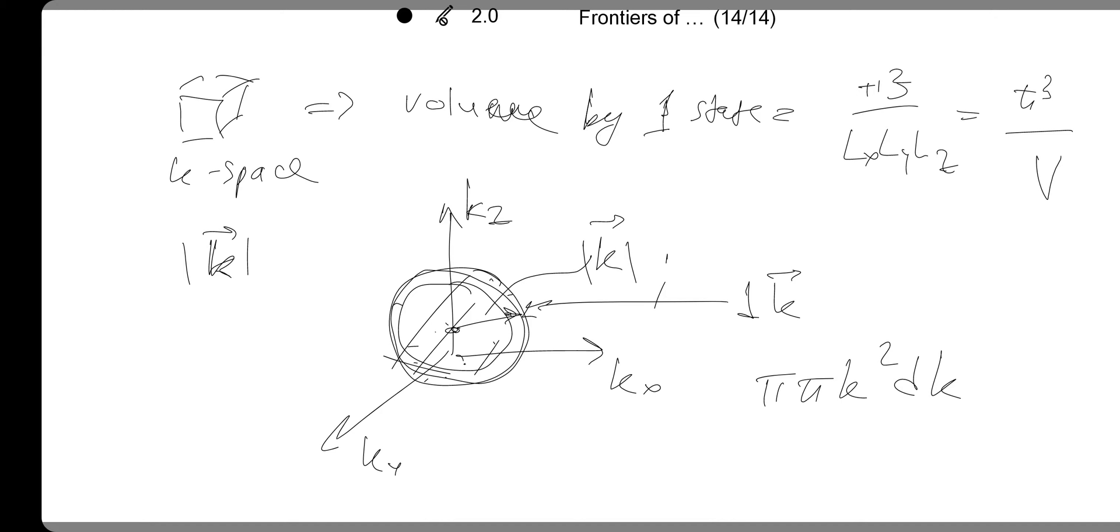And then now we need to calculate what would be the number of states within this spherical shell, so g of k dk. This equals the volume of the shell divided by volume per one state. So g of k dk is 4π k squared dk divided by π cubed over V. Now we can simplify: 4π k squared V over π cubed dk.